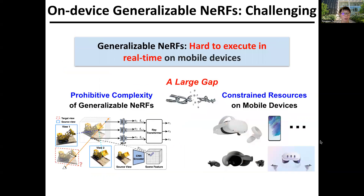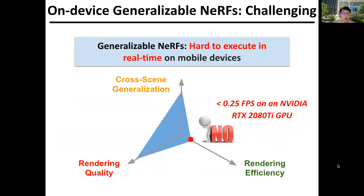However, generalizable NeRFs feature prohibitive complexity, making them hard to be executed in real-time on resource-constrained mobile devices. For example, a typical generalizable NeRF pipeline can only achieve no more than 0.25 FPS on an NVIDIA RTX 2080 Ti GPU.